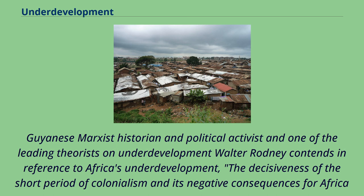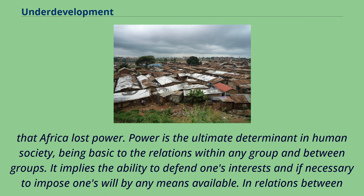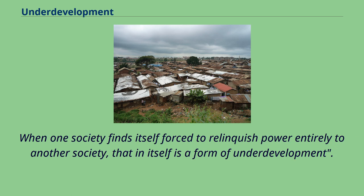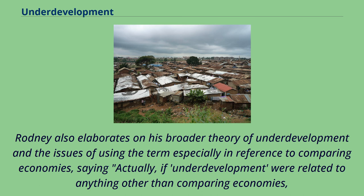Guyanese Marxist historian, political activist, and one of the leading theorists on underdevelopment, Walter Rodney, contends in reference to Africa's underdevelopment that the decisiveness of the short period of colonialism and its negative consequences for Africa spring mainly from the fact that Africa lost power. Power is the ultimate determinant in human society, being basic to the relations within any group and between groups. It implies the ability to defend one's interests and, if necessary, to impose one's will by any means available. In relations between peoples, the question of power determines maneuverability, bargaining, and the extent to which a people survive as a physical and cultural entity. When one society finds itself forced to relinquish power entirely to another society, that in itself is a form of underdevelopment.